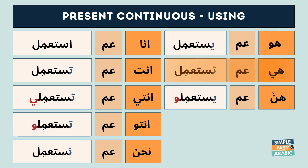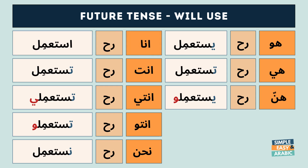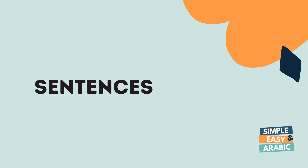هي عم استعمل، هنن عم يستعملو. Let's have a look at the future tense: أنا راح استعمل، هو رح يستعمل، هي رح تستعمل، هنن رح يستعملو.